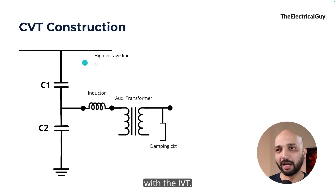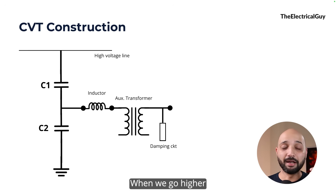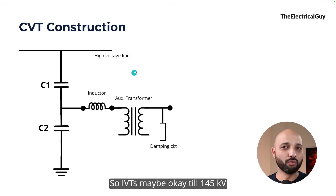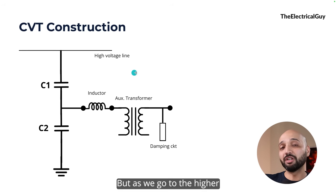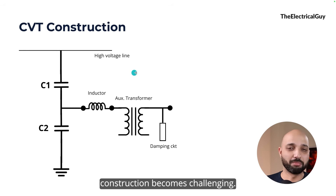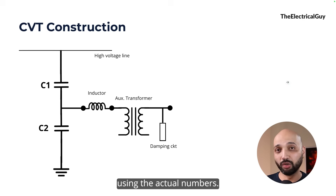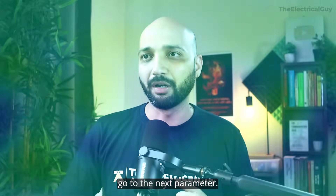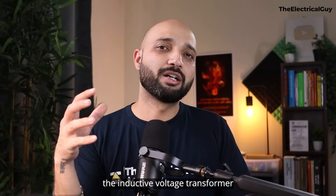This more complex construction of the CVT is actually beneficial as we go higher in voltage levels. The IVT is manageable up to about 145 kV or lower classes, but as we go to higher classes like 420 kV or 800 kV, the IVT construction becomes very challenging. Let me show that with actual numbers as we move to the next parameter: weight.